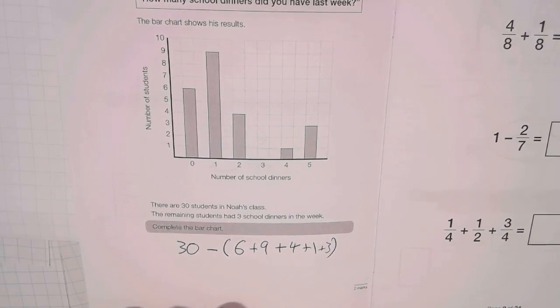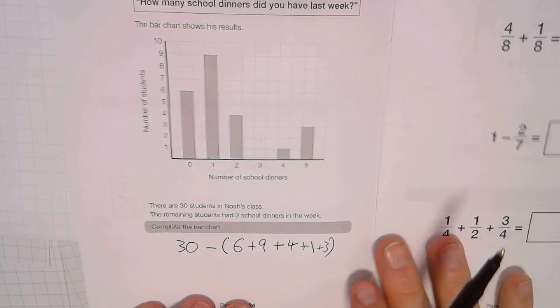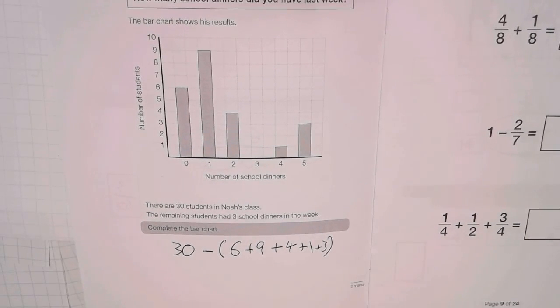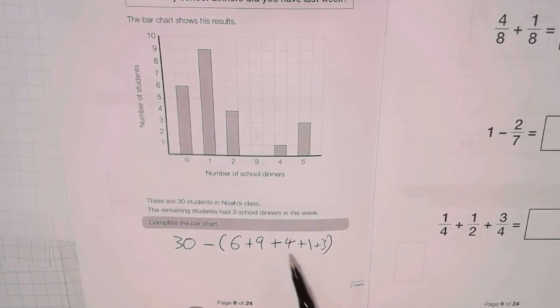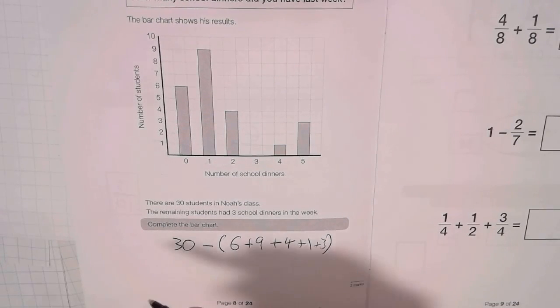And this is where a lot of people made just one silly error in their adding up and then lost a mark. So, 6 plus 9 is 15, plus 4 is 19, plus 1 is 20, plus 3 is 23.